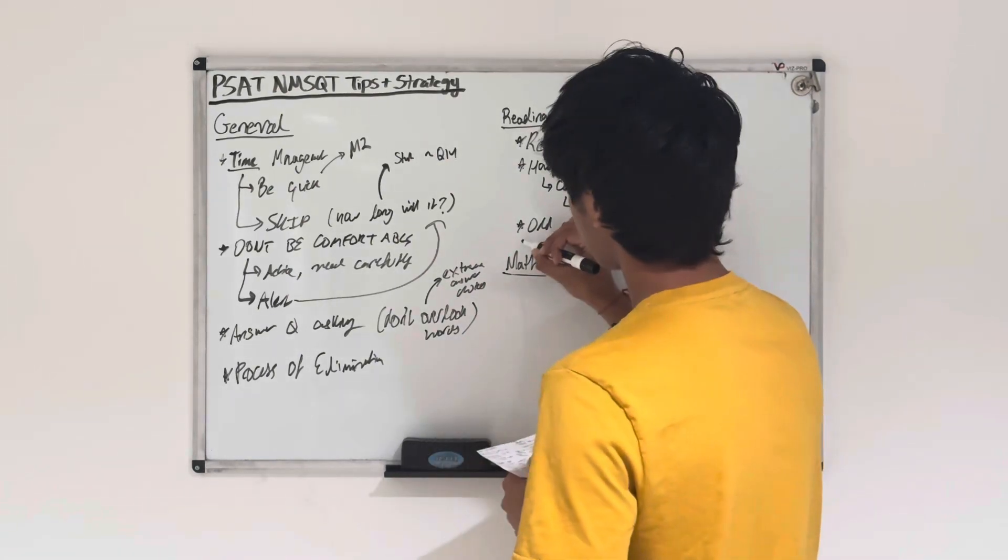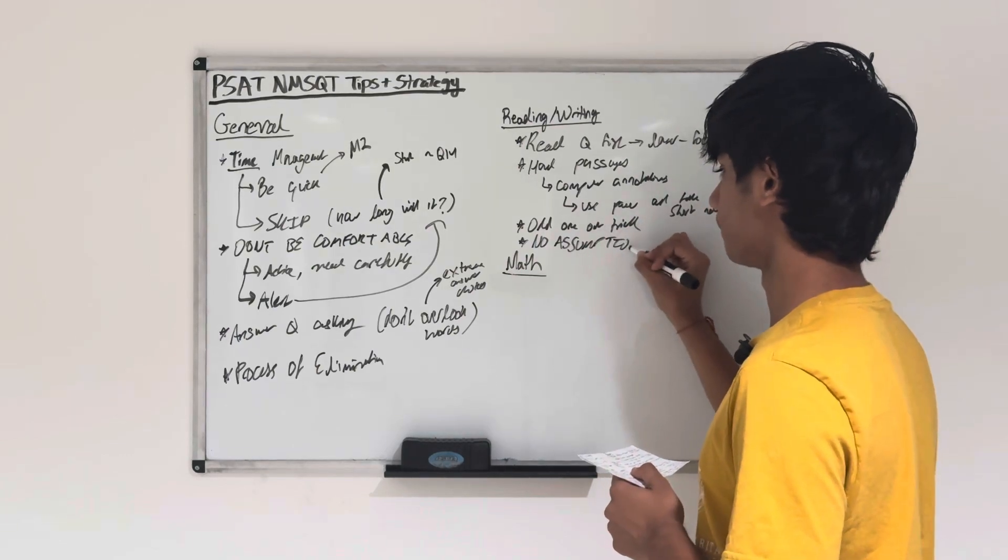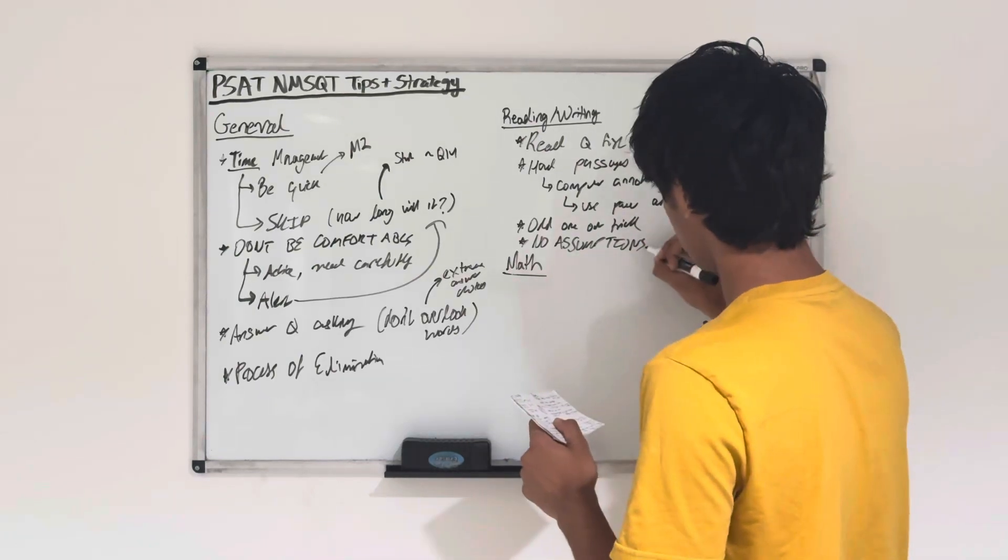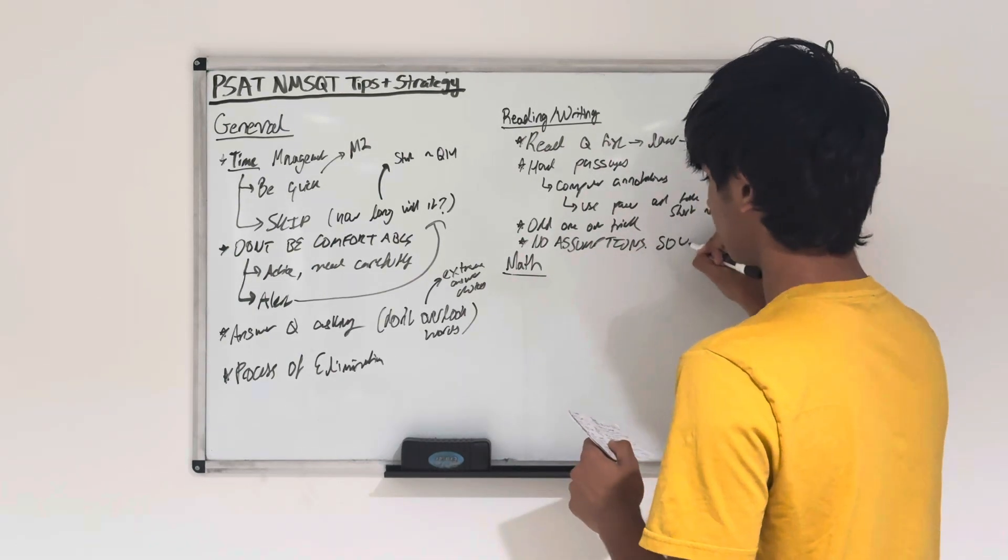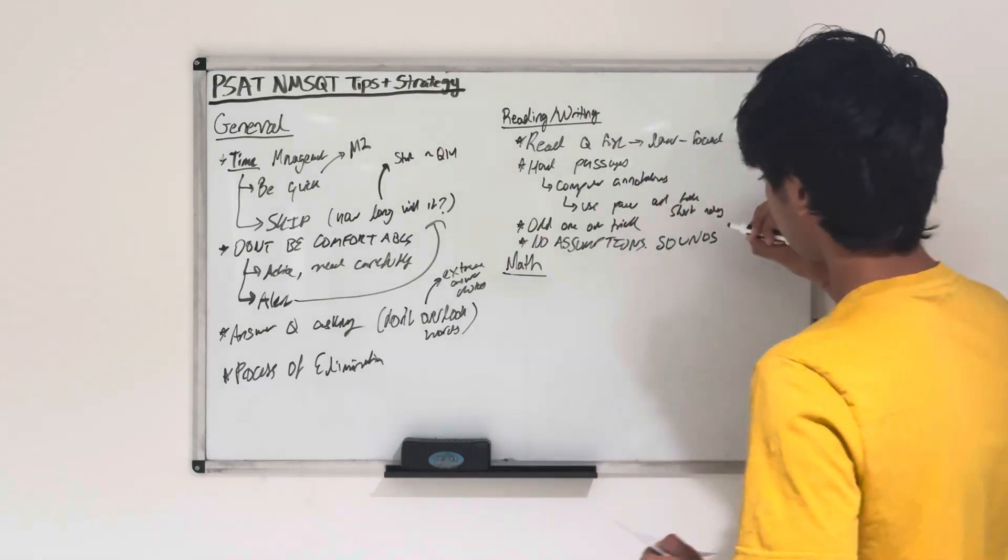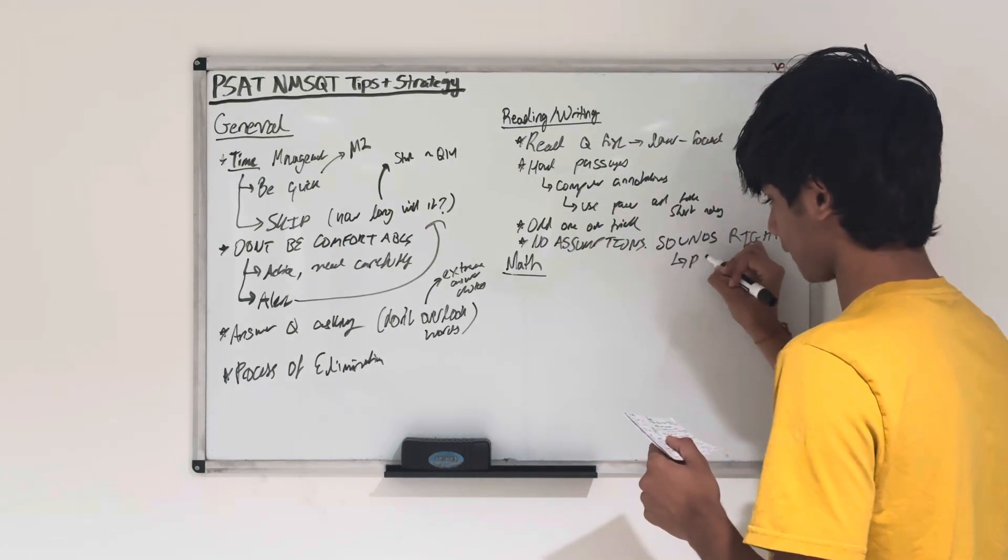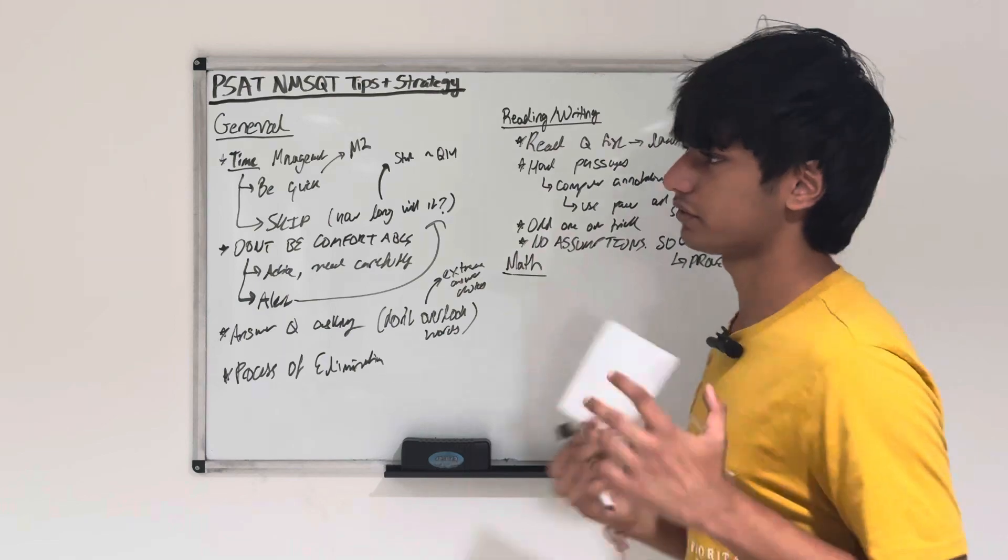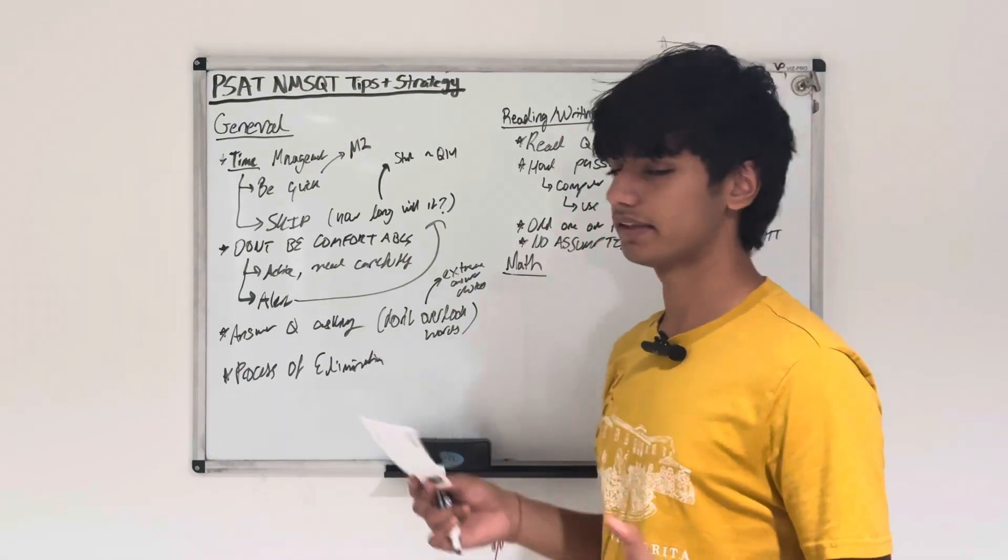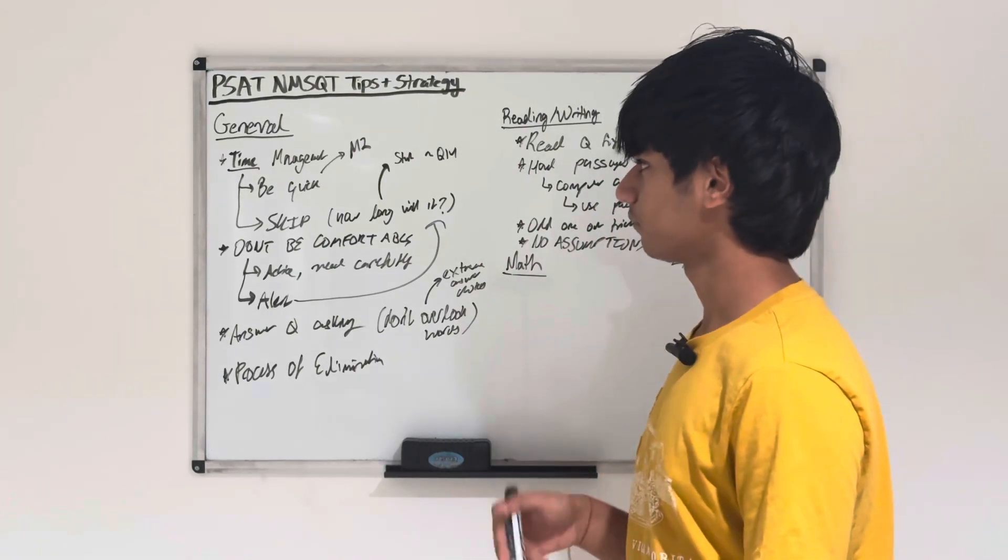And that finally connects to the last point. No assumptions. You always just want to be supporting your answer choices using the passage or using grammar rules. And you also don't want to go for sounds right because they know that some answer choices sound right, but they aren't grammatically correct. So don't rely on just using your ear for the writing questions. Prove it's right with grammar rules. And finally, I think also trusting your gut is a big thing, too. I think we tend to overthink when we're under pressure, like in this case. But trusting your gut and just going with your instinct can help.